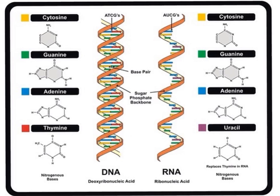Hopefully you've noticed a couple of things. First of all, DNA — deoxyribonucleic acid — is made up of two strands, the complementary strands making a double helix. RNA, as we can see, is single-stranded. Then you might be looking at the nitrogen bases: cytosine, guanine, adenine, and thymine in DNA. Here's another difference — in RNA, we have uracil instead of thymine.